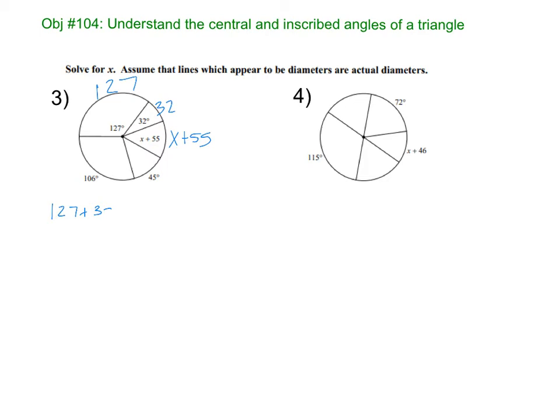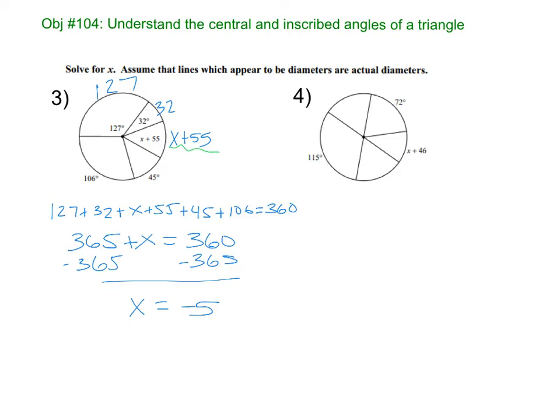127 plus 32 plus X plus 55 plus 45 plus 106 equals 360. You don't even really need to add, like, writing all that out. I'm just going to grab my calculator and add all those numbers. So 127 plus 32 plus 55 plus 45 plus 106. And I get 365 plus X equals 360. So this is interesting. You actually get a negative answer. X is negative 5. And that's okay, because if you were to plug in into that, that means that pie piece is 50 degrees.